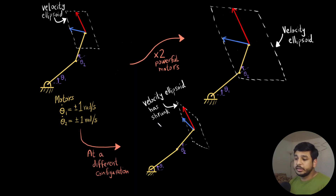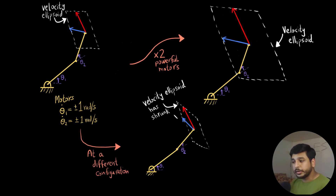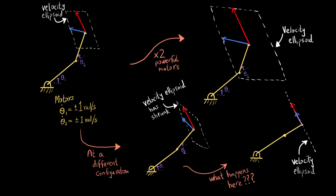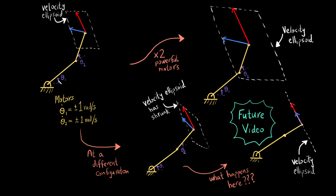Regarding configuration: at a different configuration where θ₂ is made smaller, the velocity ellipsoid shrinks. And if θ₂ becomes zero, the a and b vectors lie along the same line, so the velocity ellipsoid collapses down to a single line. This is a very interesting case that we will look at specifically in one of our future videos — two videos from now.